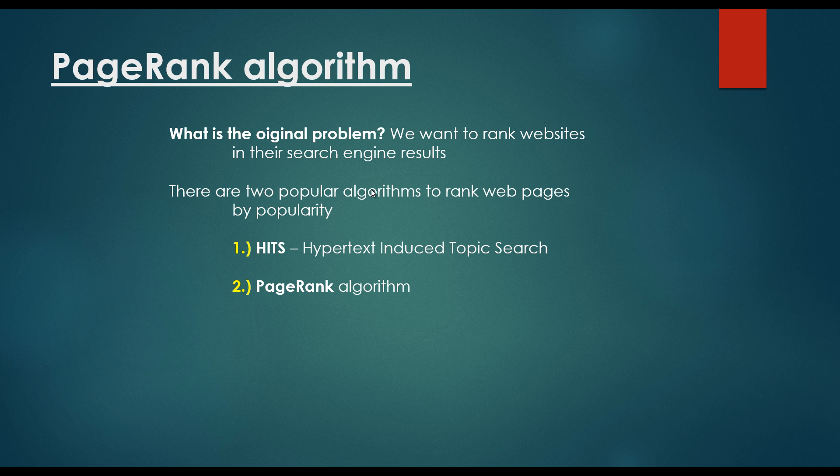So there are two popular algorithms to rank web pages by popularity. First of all, here is the so-called hypertext-induced topic search, which is sometimes working fine but not always. And a bit better algorithm is the PageRank algorithm, which is the main algorithm behind Google search.